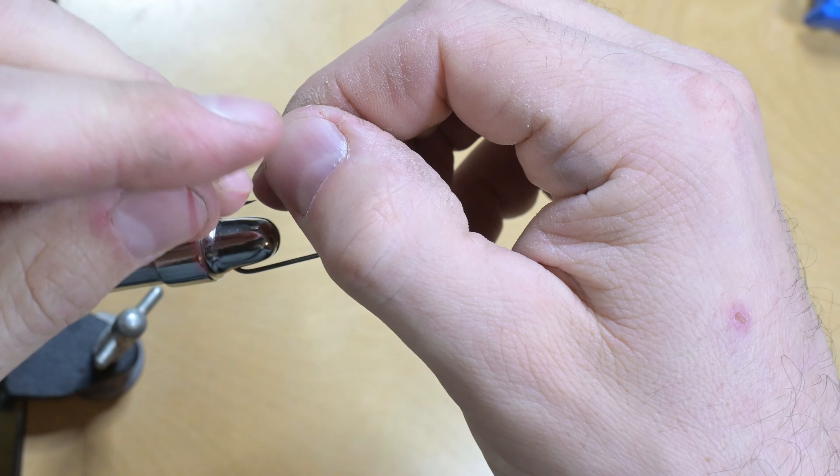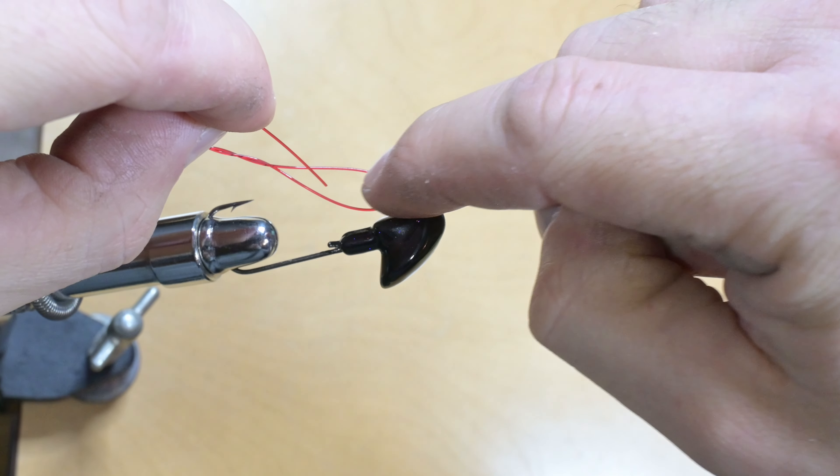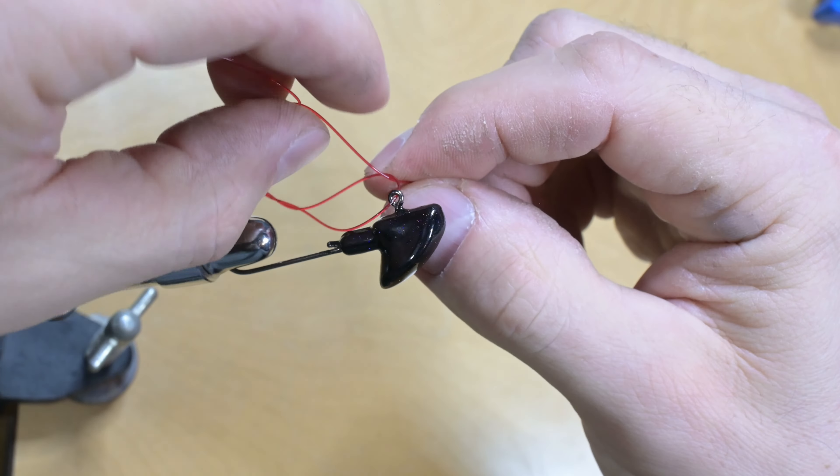Take the tag end and pass it through the loop we've created by the eyelet, then pass it back through this second loop that we have now created. It should look something like this.